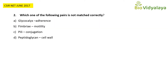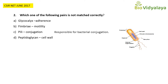Question number two: Which one of the following pairs is not matched correctly? Option A: glycocalyx — adherence; option B: fimbriae — motility; option C: pili — conjugation; option D: peptidoglycan — cell wall. We have to find which pair is not matched correctly. Glycocalyx and adherence is correct — glycocalyx is involved in cell interaction, communication, signaling, and adherence.